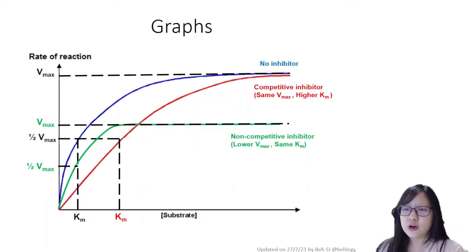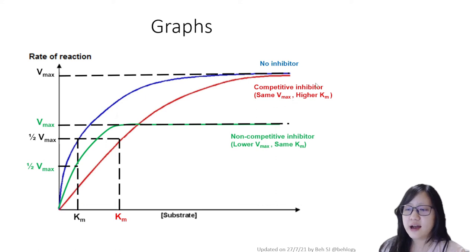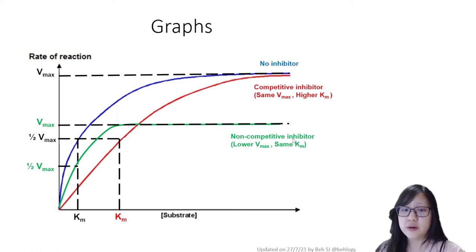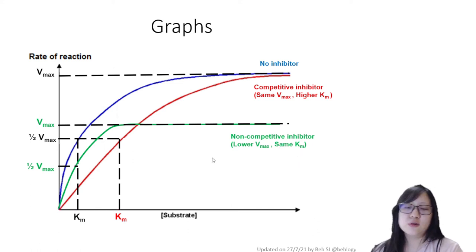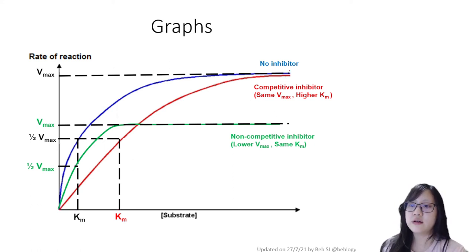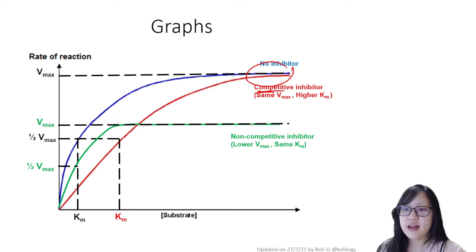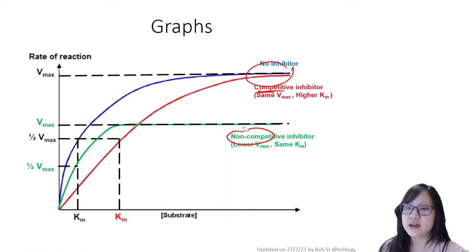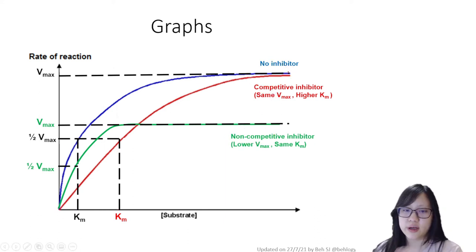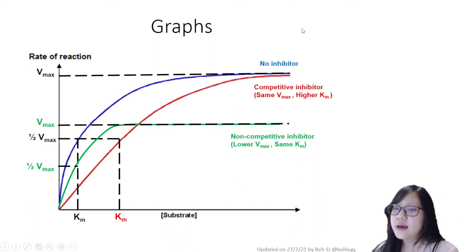Here is the comparison diagram of both inhibitor types. For competitive inhibitor: same Vmax, higher Km. For irreversible non-competitive inhibitor: lower Vmax, same Km. To remember which is which — if the curves tail off together at the top, that is competitive inhibition. If there is a lower Vmax, that is non-competitive inhibition. Vmax is the most obvious indicator; Km requires a bit more thought to calculate.